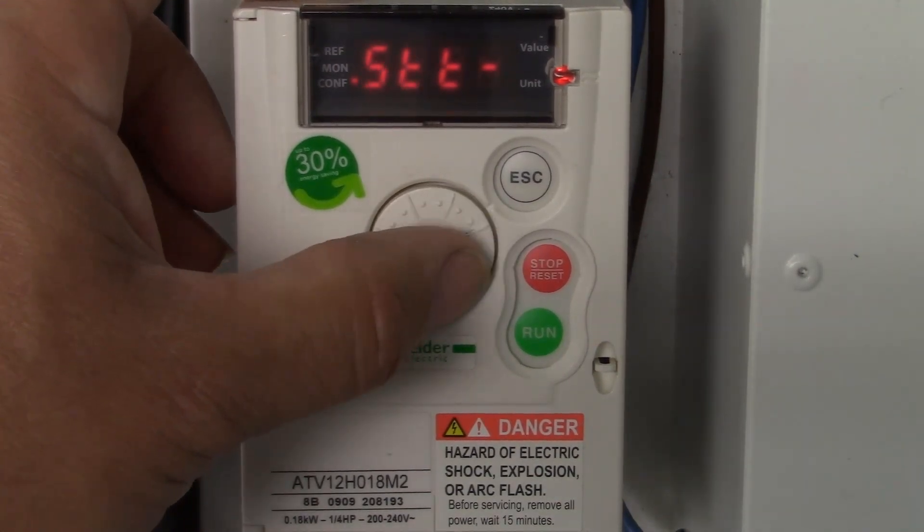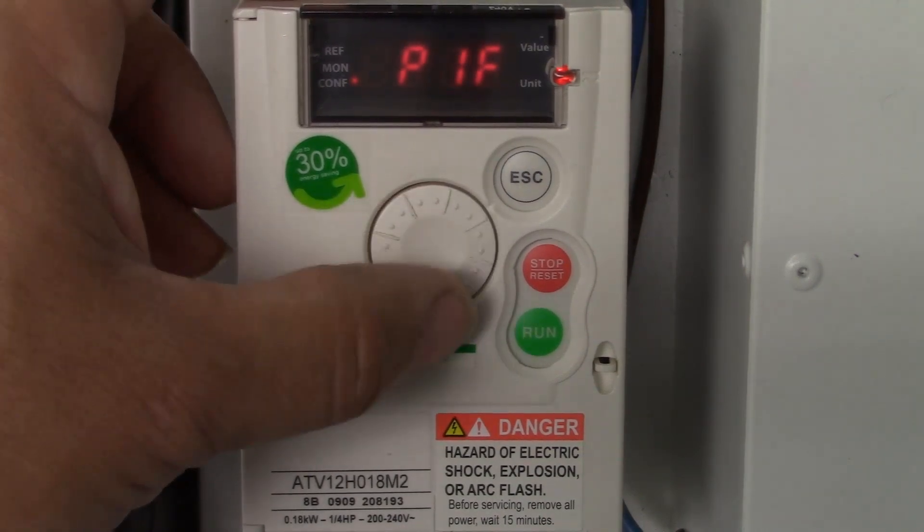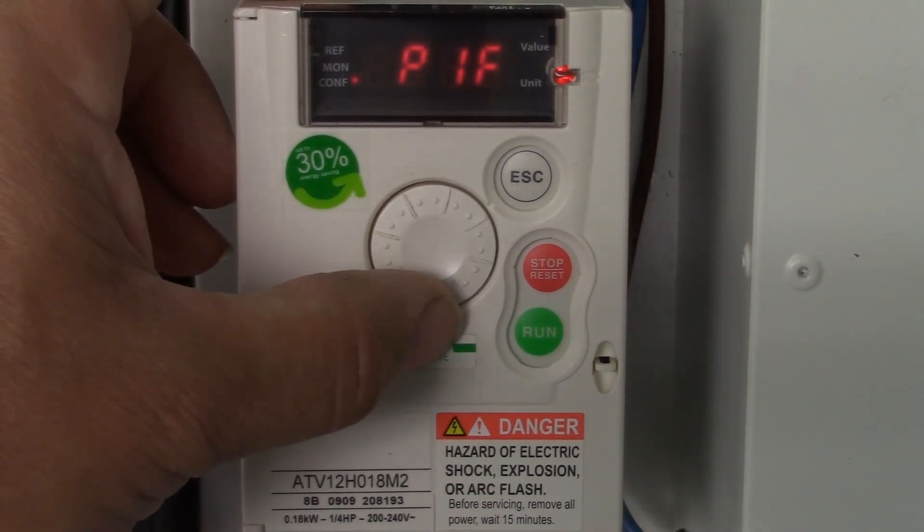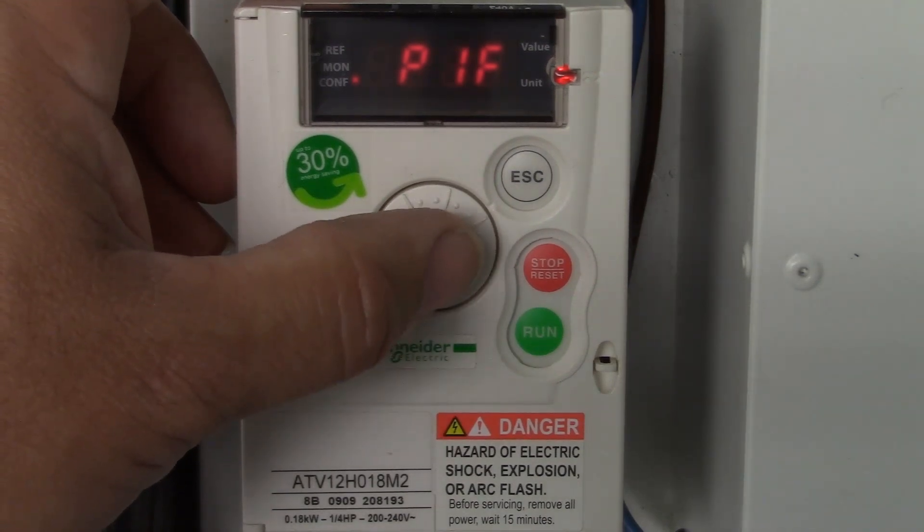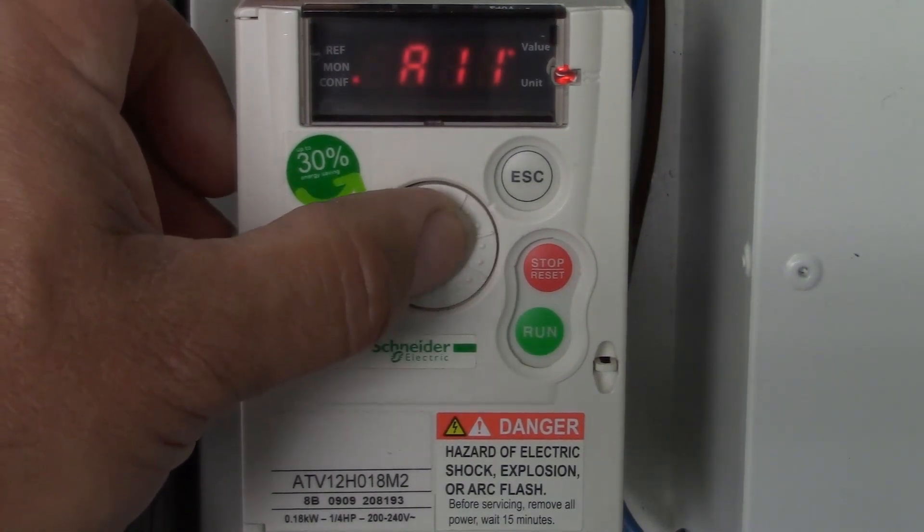Now scroll down to the PID menu and press enter. You will now have PIF on the display. Press enter and select the input to be used for the feedback. In this case AI1 as it is the only analog input on this drive.